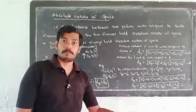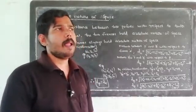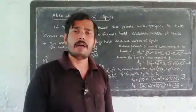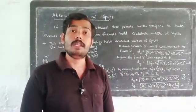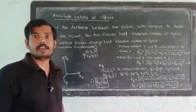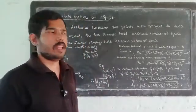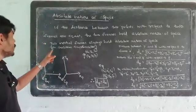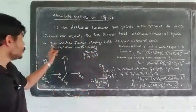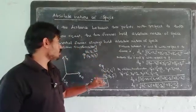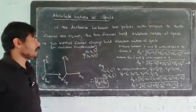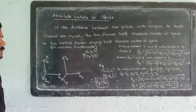Inertial frames obey the absolute nature of time. Inertial frames also obey the absolute nature of space. The Galilean transformation applies to inertial frames, so we can say Galilean transformation holds the absolute nature of space. Two inertial frames always hold the absolute nature of space.